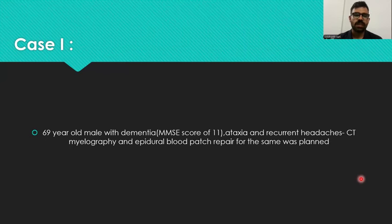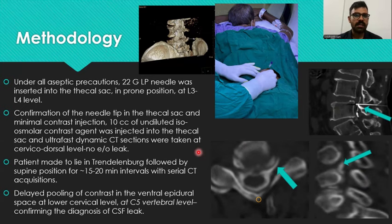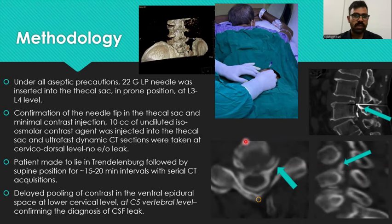Case one is a 69-year-old male with dementia presenting with an MMSE score of 11, ataxia, and recurrent headaches. CT myelography and epidural blood patch repair were planned. Under strict aseptic precautions, a 22-gauge LP needle was inserted into the thecal sac in prone position at the L3-L4 level. Confirmation of needle tip placement was done, and 10cc of undiluted iso-osmolar contrast was injected into the thecal sac. Ultra-dynamic CT sections were taken of the cervical-dorsal region of interest, with no immediate evidence of leak.